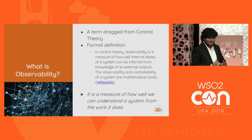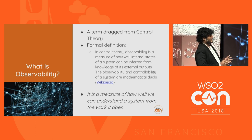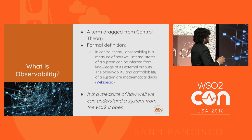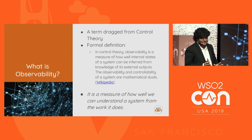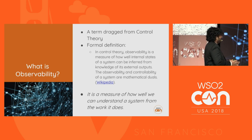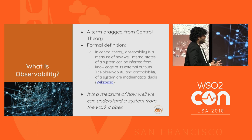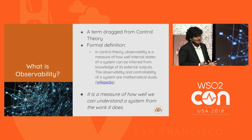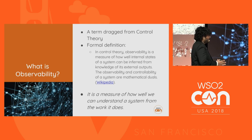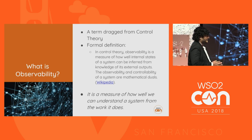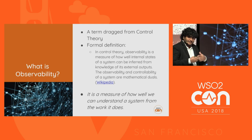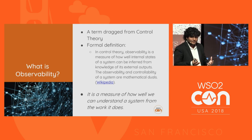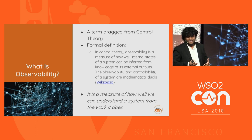So first of all, what is observability? The term mainly came from control theory. The rough idea is that it's basically a measure of how well the internal states of a system can be inferred from the external outputs we get.